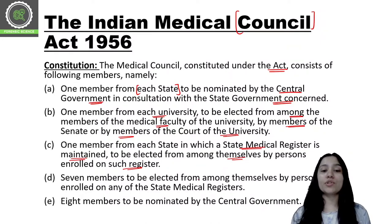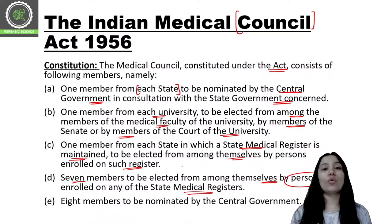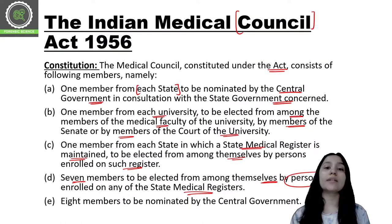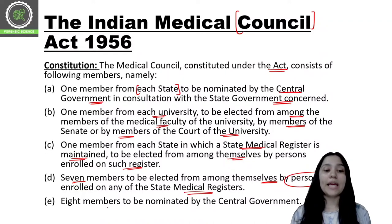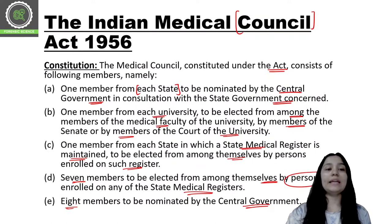Seven members are to be elected from among themselves by persons enrolled on any state medical register. In any state medical register, seven members are elected. Additionally, eight members are to be nominated by the central government into the Indian Medical Council.